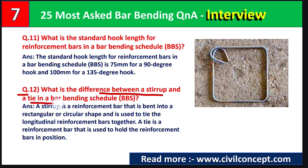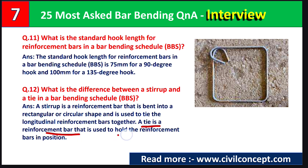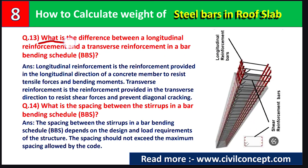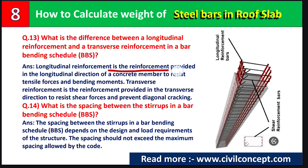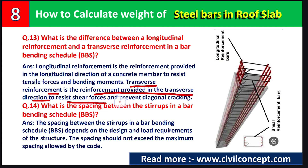Question number twelve: what is the difference between stirrups and ties in a bar bending schedule? A stirrup is a reinforcement bar bent into a rectangular or circular shape used to tie the longitudinal reinforcement bars together. A tie is a reinforcement bar used to hold reinforcement bars in position. Question number thirteen: longitudinal reinforcement is provided in the longitudinal direction to resist tensile force and bending moments, while transverse reinforcement is provided in the transverse direction to resist shear force and prevent diagonal cracking.